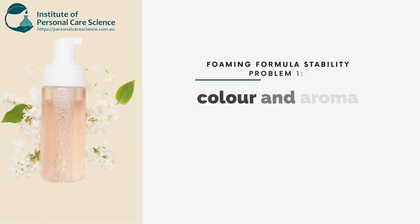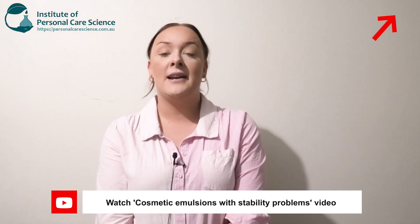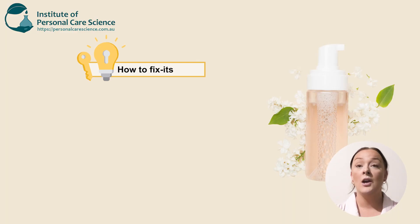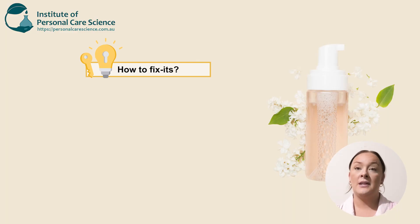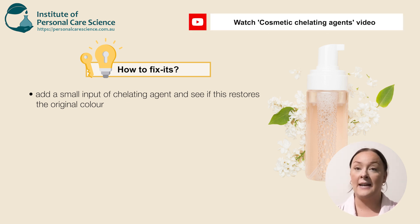My first common stability problem when it comes to foaming products is colour or aroma changes — I did speak about this in my cosmetic emulsion stability video as well. Colour and aroma changes can be a sign of chelation or oxidation problems. To fix or improve these issues, you could try firstly adding a small input of a chelating agent, and if this restores your formula back to its original colour, you will need to add that into your final formulation.